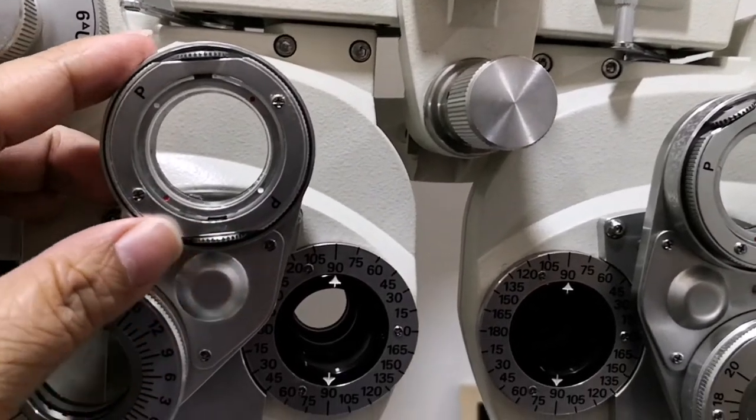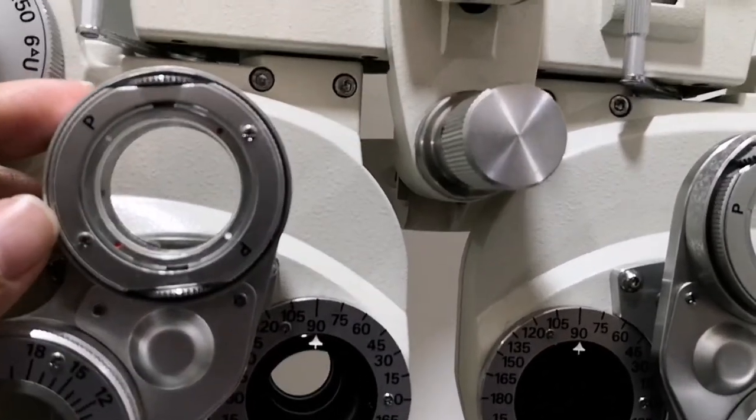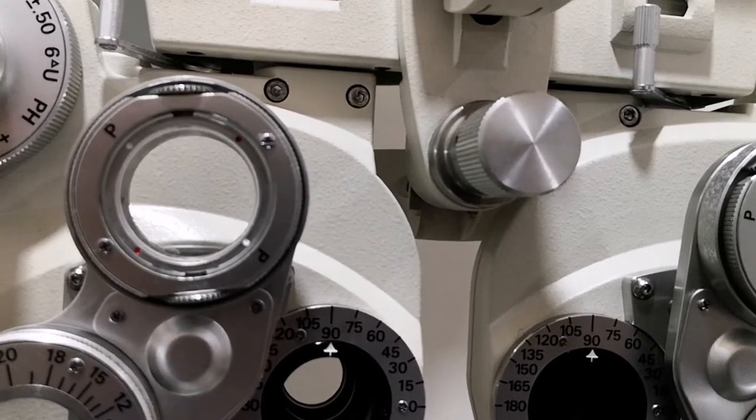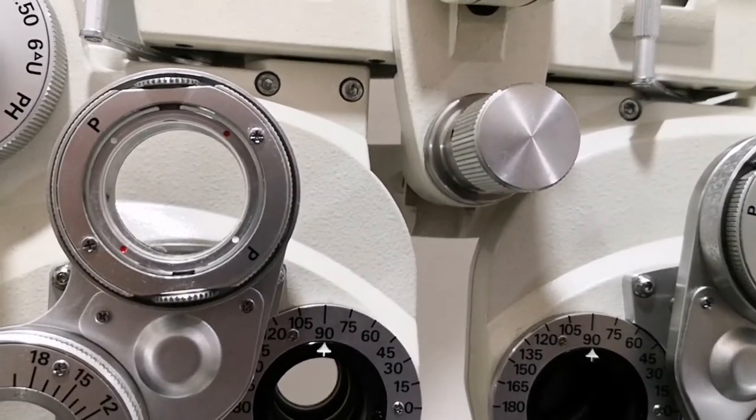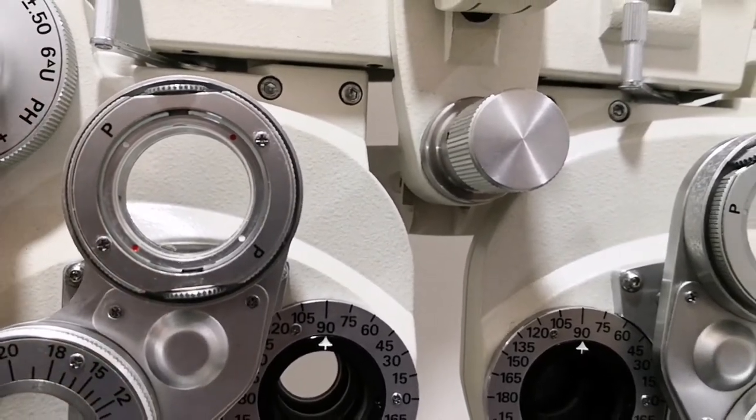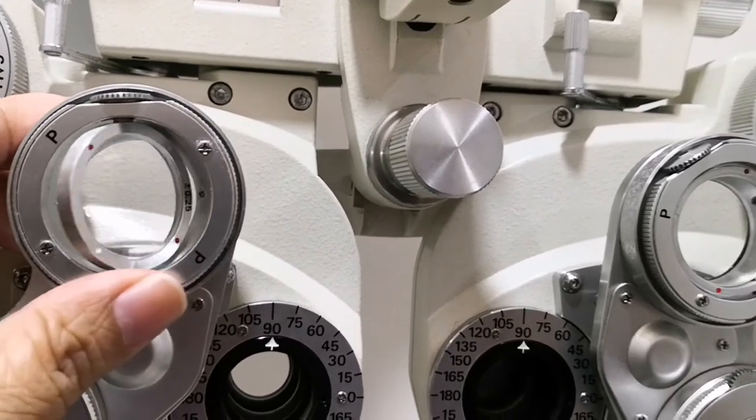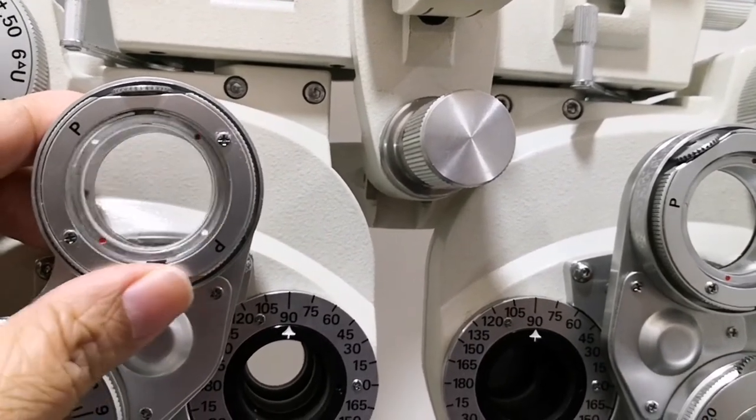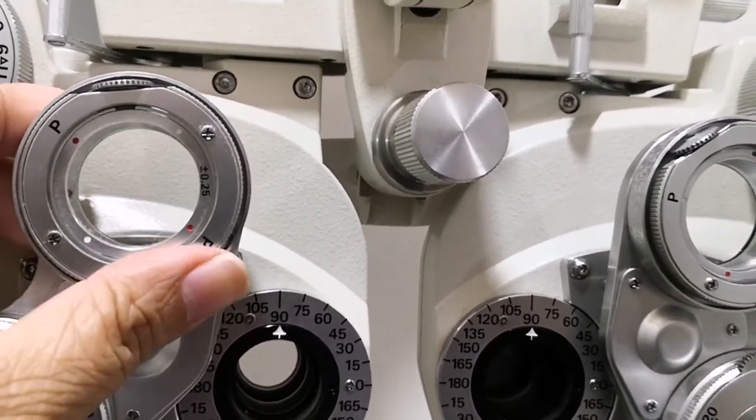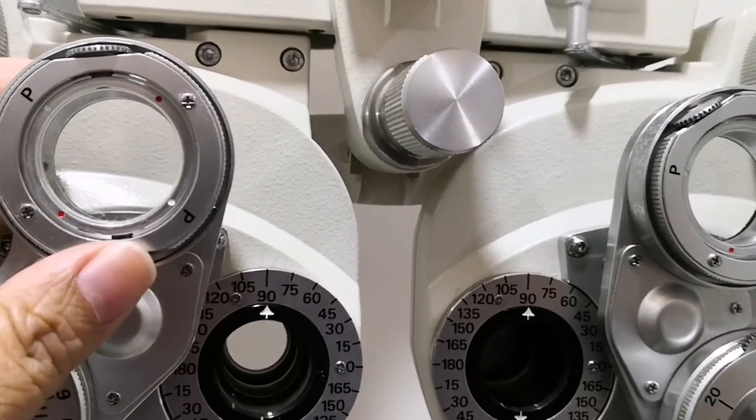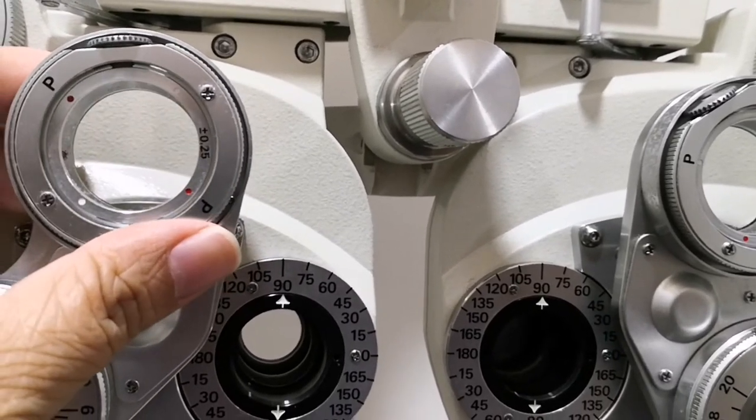Next, we have the Jackson cross cylinder or the JCC. It is marked with red and white dots, but for other phoropters it can also be a green dot. You can flip it over and it is useful in confirming the cylinder axis and cylinder amount of the patient.